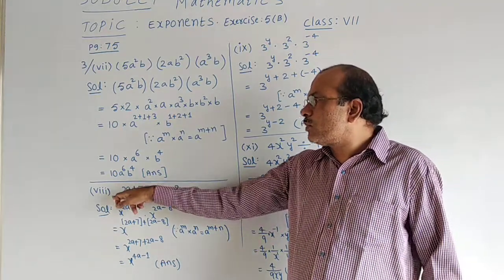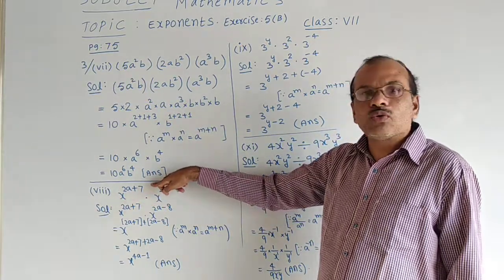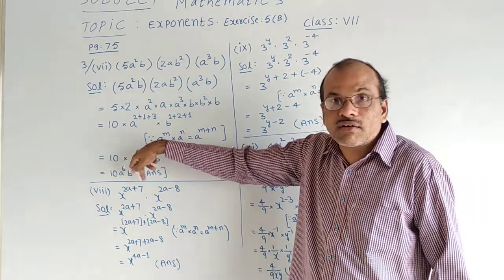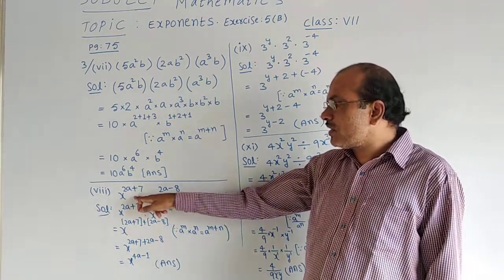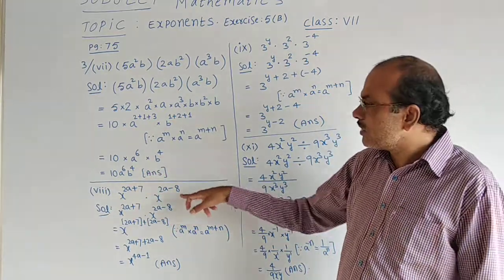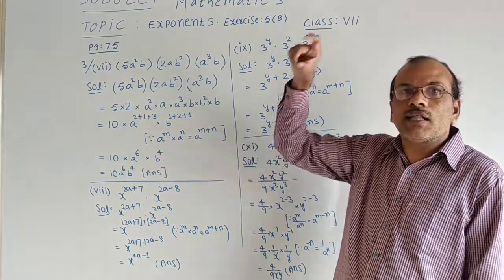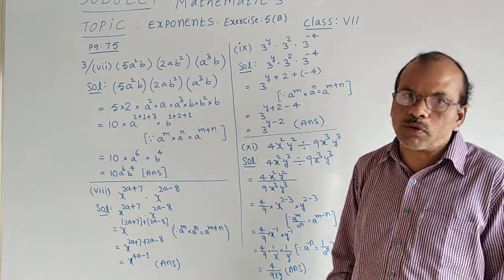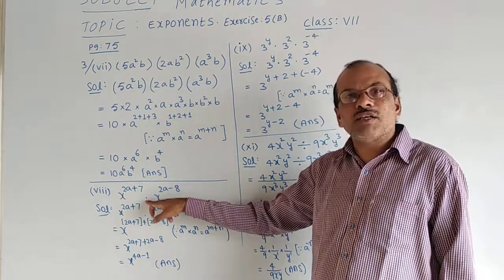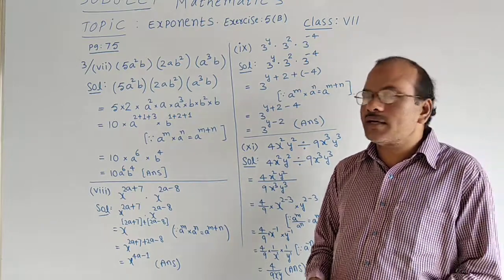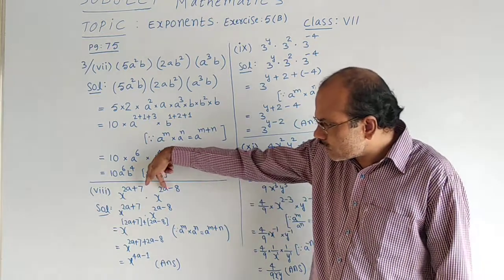Now coming to the 8th bit, question 3 only. We have x to the power (2a + 7) — the full expression 2a + 7 is in the exponent — into x to the power (2a − 8), where 2a − 8 is fully in the exponent. Both bases are equal and in multiplication form, so the powers must be added with the same formula.